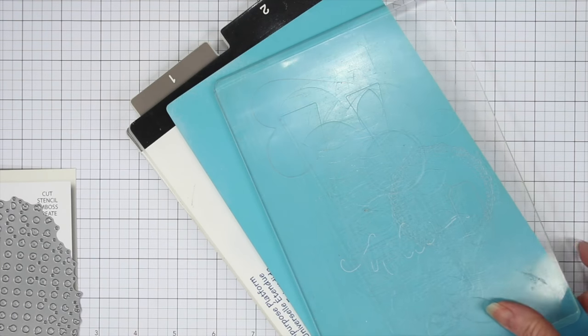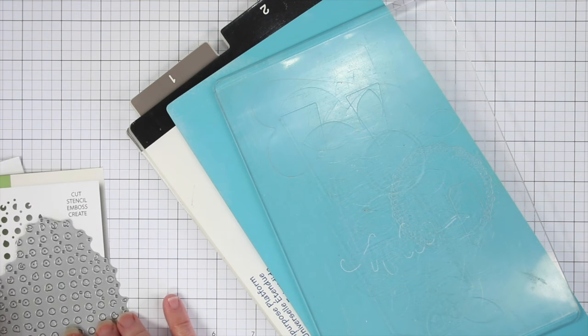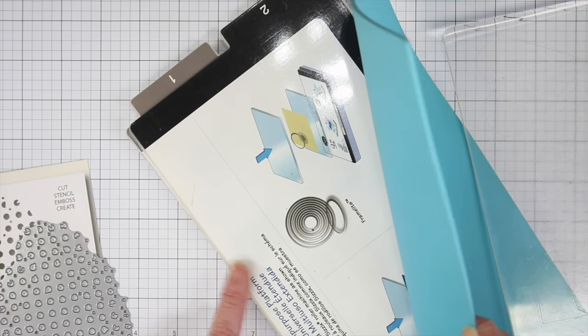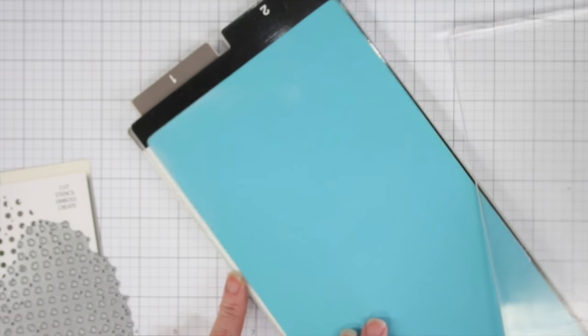I'll show you the sandwich that I use for my big shot. So I have my die and my cardstock, and I start off with the full platform on the bottom. Then I have a silicone mat that I use next.